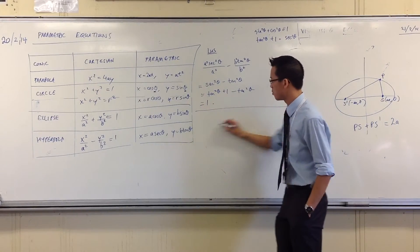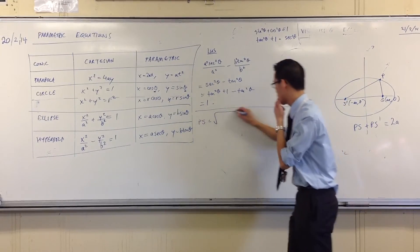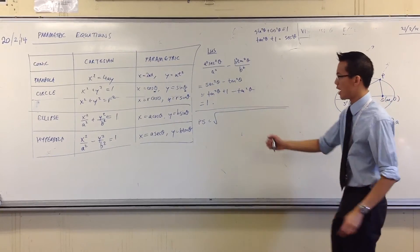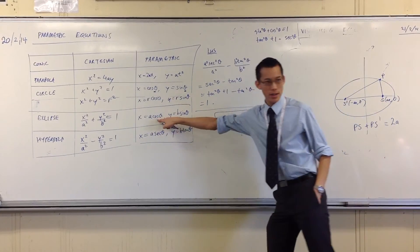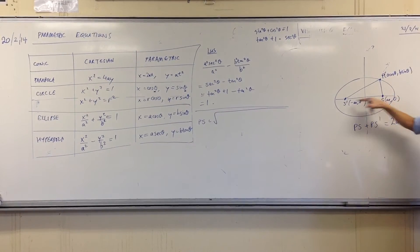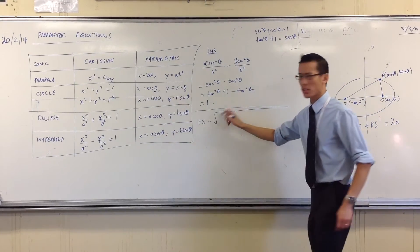So therefore, I can just say, well, what is PS? What's it equal to? It's the square root of, well, this is just a distance formula, isn't it? I'm going to go from these coordinates, A cos theta, B sin theta, to these coordinates. I'll just do this case, and then the other one follows very easily. What's going to go underneath the square root? What have we got?